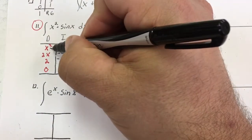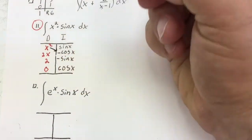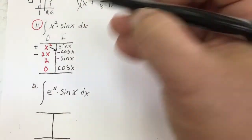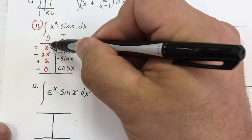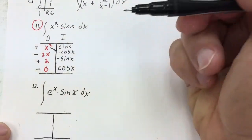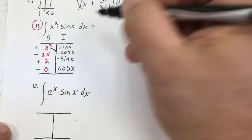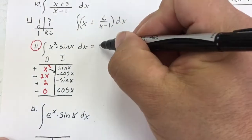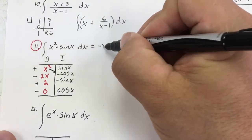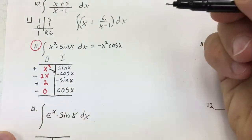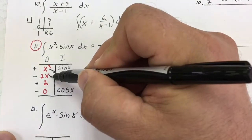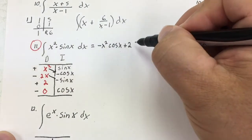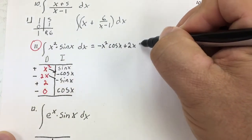Now the diagonals are the answers, but before I do that, I have to alternate plus, minus, plus, minus. So it's going to be positive x squared times negative cosine x. So my integral is going to be negative x squared cosine x. Negative negative, so plus 2x sine x.